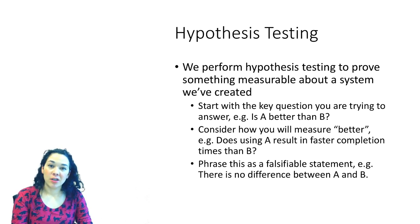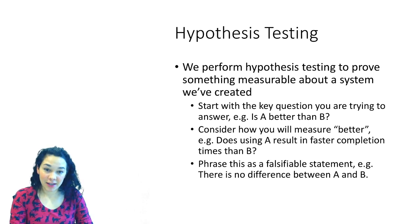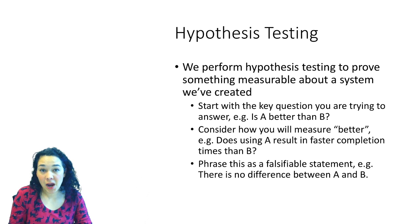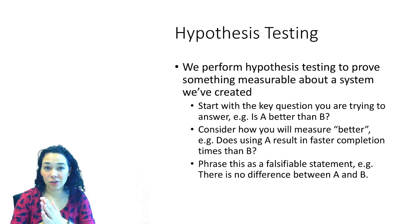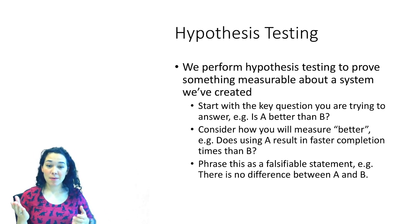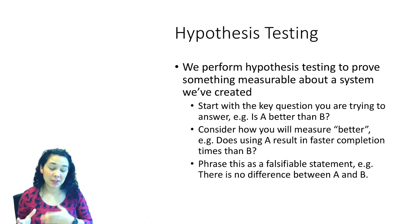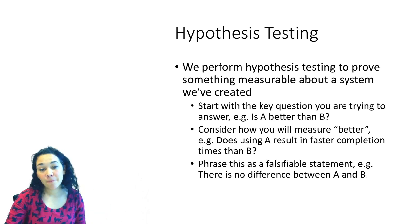When we run an evaluation we're often trying to prove something about a product or system that we've created. The most common way of doing this is through hypothesis testing. We perform hypothesis testing to prove something measurable about a system. Key factors for developing a hypothesis: start with the key question you're trying to answer, such as 'Is A better than B?' Then consider how you're going to measure what 'better' means — for example, 'Does A result in faster completion times than B?'